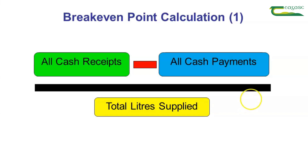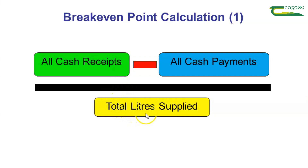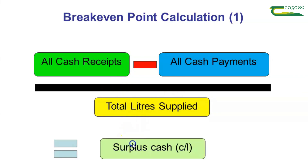To calculate the break-even, we take all cash payments away from all cash receipts, and this will give us surplus cash. We then divide the surplus cash by the total litres of milk supplied to the co-op during the year, and this will give us the surplus cash in cent per litre.